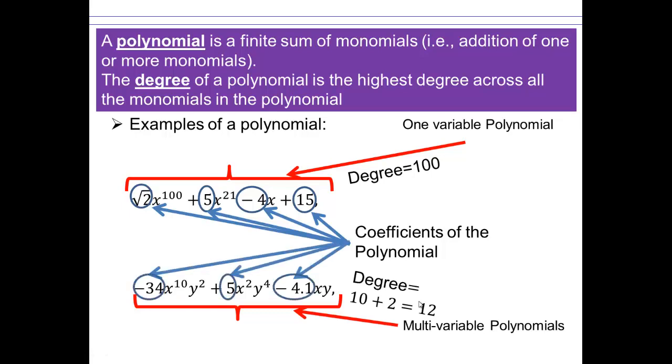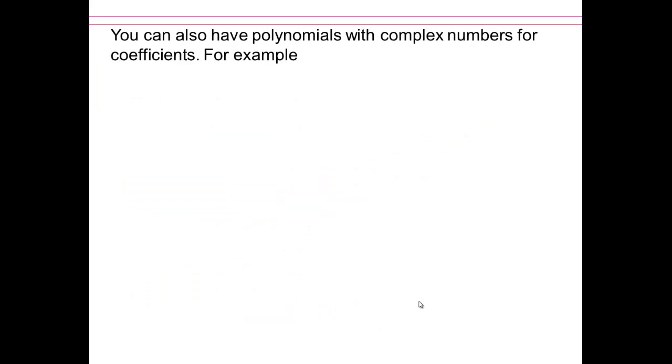The coefficients are negative 34, a 5, and a negative 4.1. Those are the coefficients of that polynomial. You can also have polynomials with complex numbers for coefficients. So you're not just restricted to real numbers. You can pretty much have whatever you want for coefficients, and the degree still is the same. Addition of all the exponent terms in each monomial, and then the highest power.